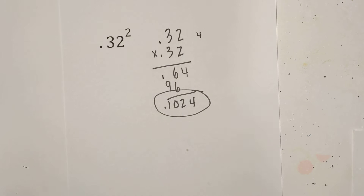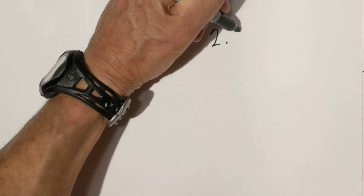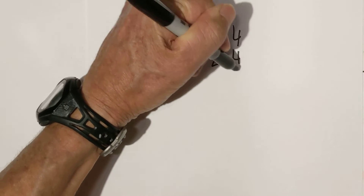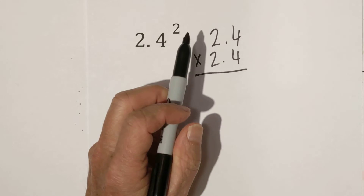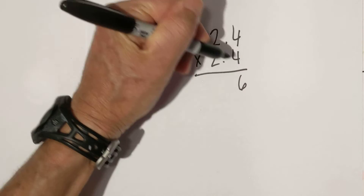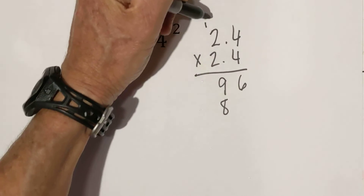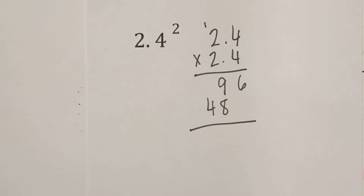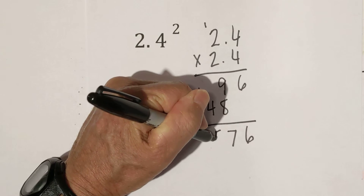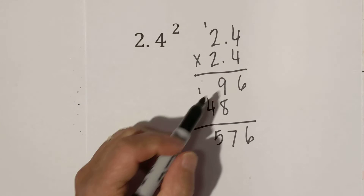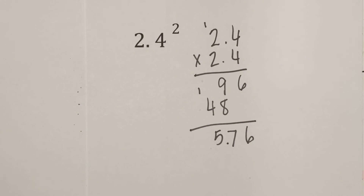And we'll work one final example. Now we have two and four tenths, so let's rewrite — we have two and four tenths times two and four tenths. Now we count how many are to the right. Looks like we have two. Now we just multiply like it's normal. There's sixteen, there's nine, there's eight and four. Bring down — we have a six, we have seventeen and one. Five seventy-six. And remember we need two numbers to the right, so that is five and seventy-six hundredths.